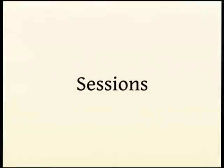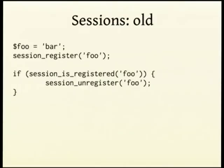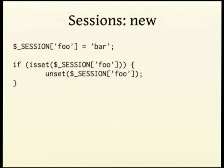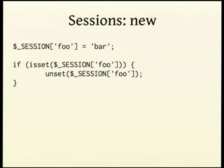Another thing that's changed is the session API, but again only if you've been using very outdated code. There are functions called session_register, session_is_registered, and session_unregister, which go into the actual function scope and pull variables out and manipulate them. Instead, there's the much less magic $_SESSION super global, which you should be using. The code is also actually simpler because it just uses isset and unset like everything else to do with variables.